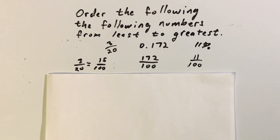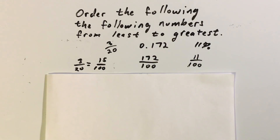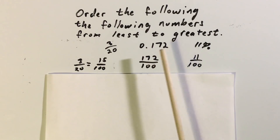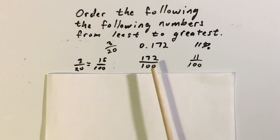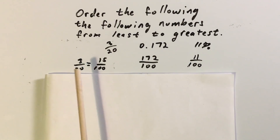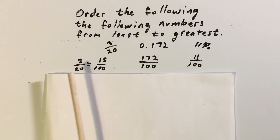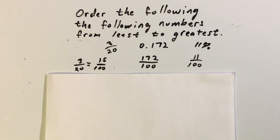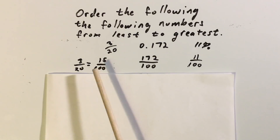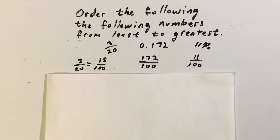For the other numbers, all I did was place them over a hundred: eleven percent is eleven over a hundred. For a hundred and seventy-two thousandths, I took away one zero and wrote a hundred and seventy-two over a hundred. Then for three-twentieths, I had to find the equivalent fraction, which is fifteen-hundredths. Once we have them all over a hundred, all we say is the number as a percent — so that is fifteen percent, one hundred seventy-two percent, and eleven percent.